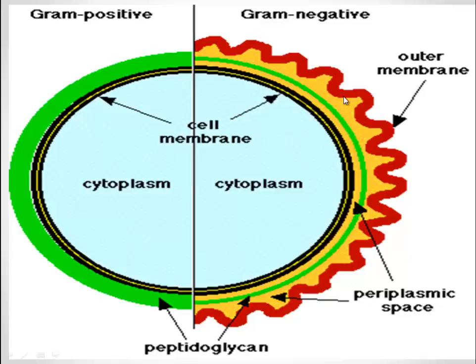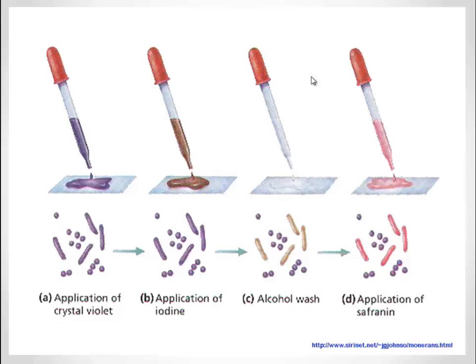Let's revise the four steps of gram staining. First, apply crystal violet stain on a heat-fixed smear of a bacterial culture. Then apply gram's iodine solution, which acts as a mordant and fixes the crystal violet by forming a CVI complex. Then add a decolorizer such as alcohol or acetone, due to which some cells decolorize and some retain the stain. The last step is the application of safranin as a counter stain, causing gram negative cells to appear red and gram positive cells to appear purple.